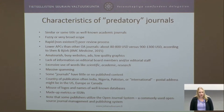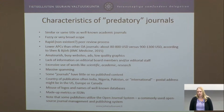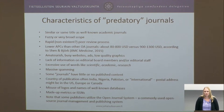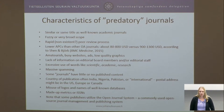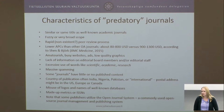Here is a list of some characteristics of predatory journals — symptoms that raise suspicion when seen on a website. These include a similar or same title as well-known academic journals, a fuzzy or broad scope, and rapid — possibly meaning non-existent — peer review. According to a study by Shenan Björk from last year, predatory open access journals tend to have lower APCs: about $80 to $800 versus $900 to $1,300 on average for other open access journals.